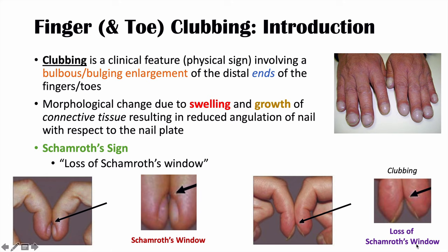We put our two index fingers together like this — this is normally how we look at clubbing — and there's usually a gap in between; that's Schamroth's window. With clubbing, that gap or Schamroth's window is lost because of the morphological change in the fingertips or the distal ends of the toes. This is called Schamroth's sign and it is positive for clubbing.